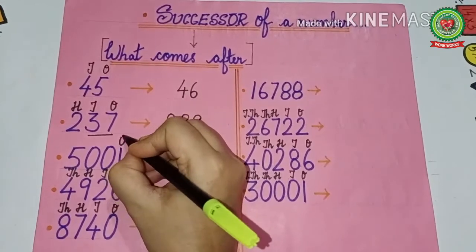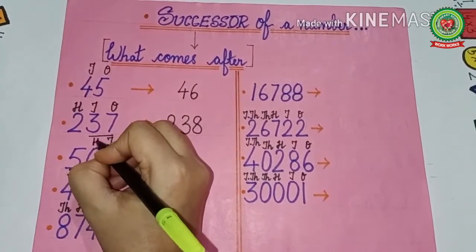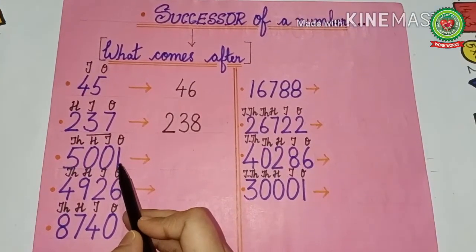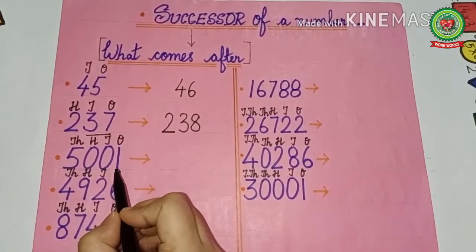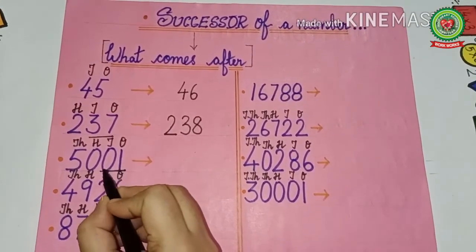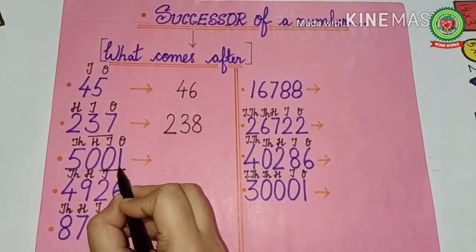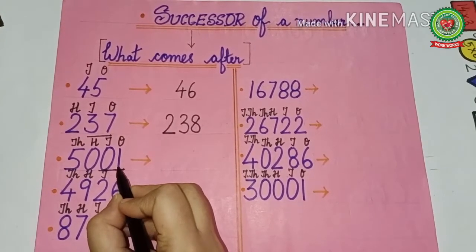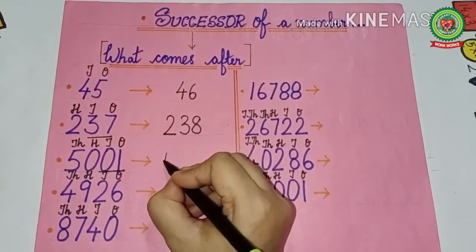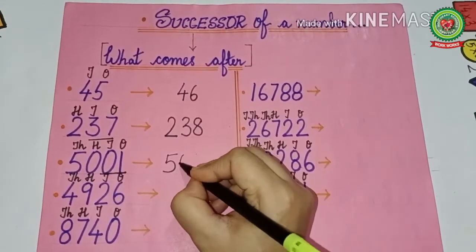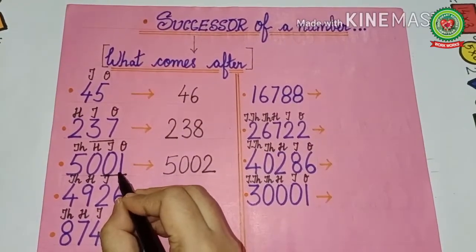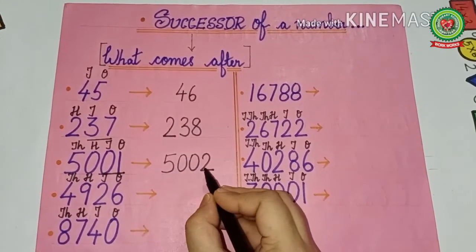Now read the next number with me: 50001. Let's write the place value table — ones, tens, hundreds, thousands. The digit in the ones place is 1 and in the tens place is 0. So we change the ones and tens: 01 means one, and what comes after one is two. The thousands and hundreds places remain the same — so the successor is 50002.